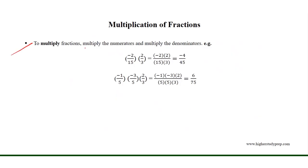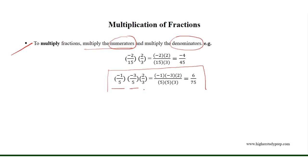To multiply fractions, multiply the numerators and multiply the denominators. For example, if we want to multiply the fractions minus 1 over 5, minus 3 over 5, and 2 over 3, we multiply the numerators minus 1, minus 3, and 2, and their multiplication results in 6. The multiplication of the denominators 5, 5, and 3 results in 75. Thus, the result of the multiplication of the fractions is equal to 6 over 75.